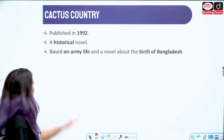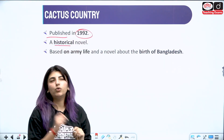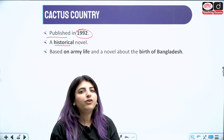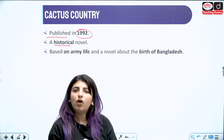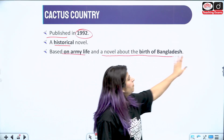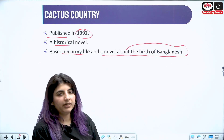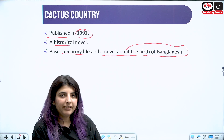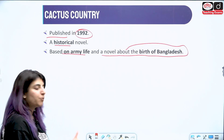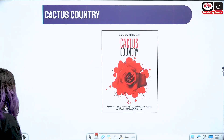Then we have Cactus Country, published in 1992. It's a historical novel of around 402-405 pages — so it's a full novel. It is based on army life and is a novel about the birth of Bangladesh. We saw that around 1971 the Bangladesh war was happening, and this work deals with how Bangladesh was born at that point of time.